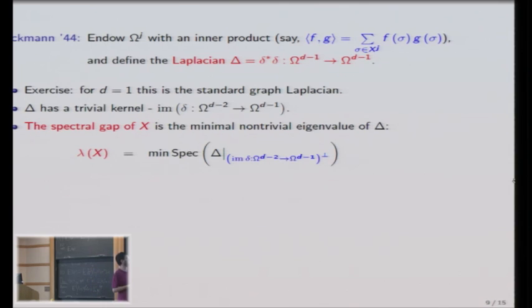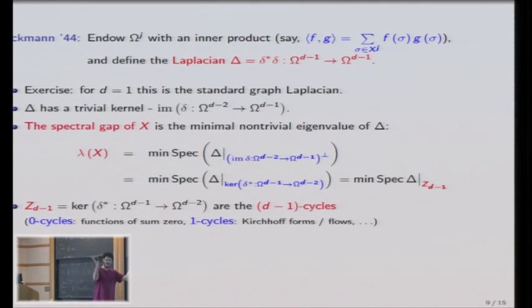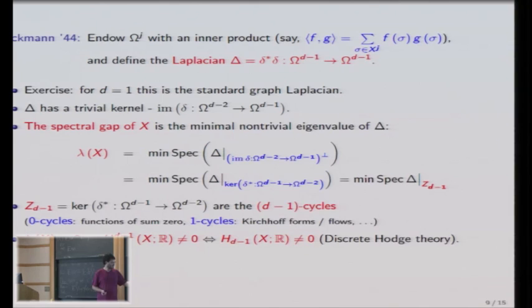Spectrum. So the spectral gap is the minimal eigenvalue in the orthogonal complement of the image. And this by the fundamental theorem of linear algebra is the kernel of the adjoint map, which are called cycles. This is also very old. So cycles are the kernel of the down-going map. For example, 0 cycles are functions which sum to 0 and 1 cycle also have a nice interpretation. These are Kirchhoff forms, one in which the inflow equals the outflow in every vertex. So this is the spectrum. This is the spectral gap of a complex.